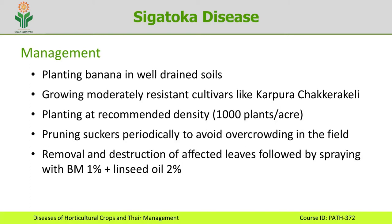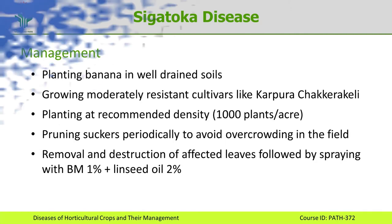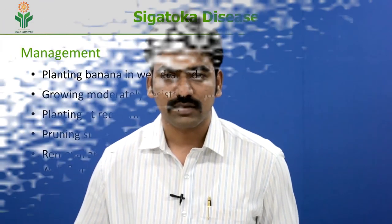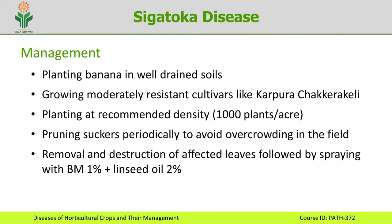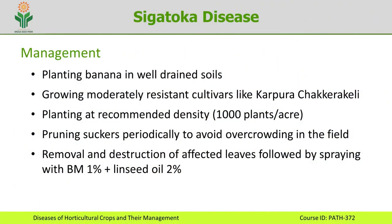Before spraying any chemical, affected leaves should be removed and destroyed, as they serve as a source of inoculum from which the disease can be disseminated to healthy plants. After removal and destruction of affected leaves, this should be followed by spraying Bordeaux mixture 1% along with linseed oil. Any fungicide applied to banana foliage must be mixed with a sticker, because the leaf surface is slippery and the fungicide will trickle down — the sticker ensures the fungicide solution attaches to the leaf surface.